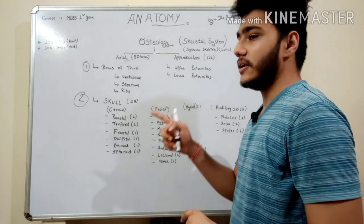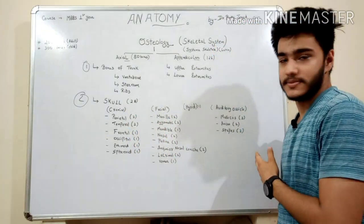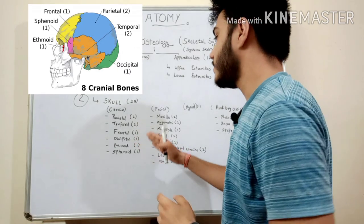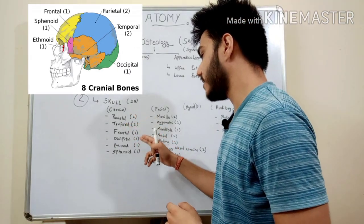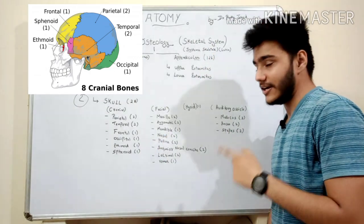And it's subdivided into three parts: cranial, facial, and auditory ossicles. In cranial there are six parts: parietal, temporal, frontal, occipital, ethmoid, and sphenoid bone. These are the cranial parts.